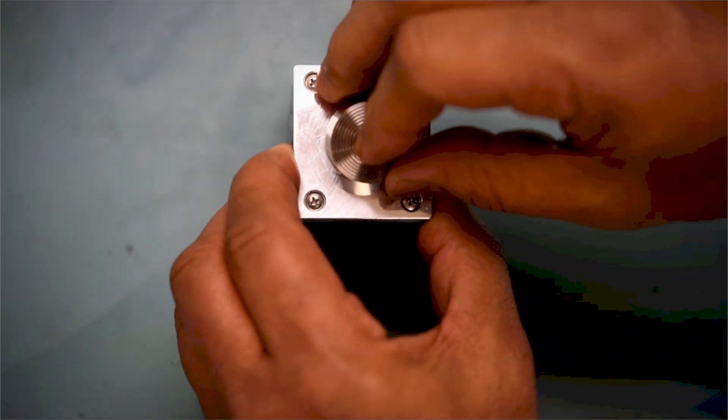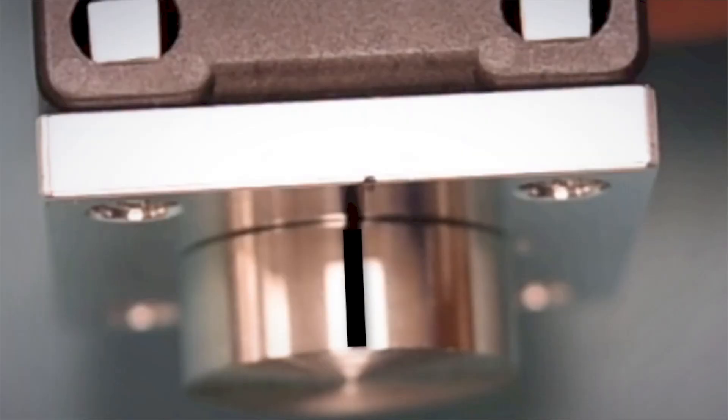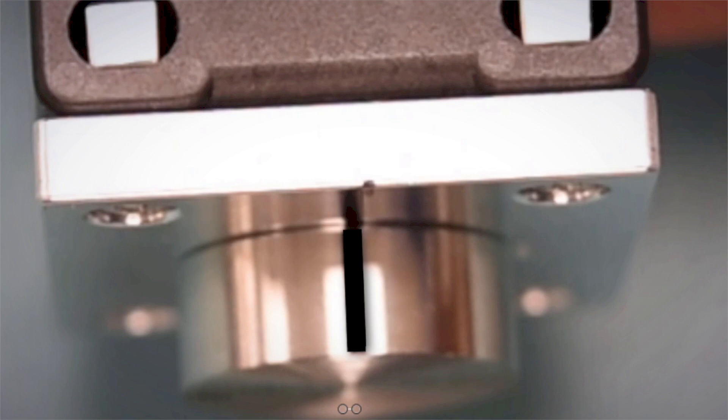After the Loctite is dried, screw the disc onto the base plate. Mark the disc in line with the alignment mark on the base plate. Then remove the disc from the base plate.